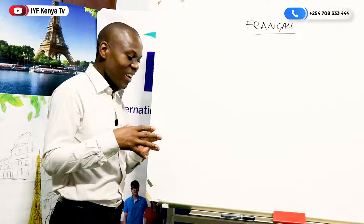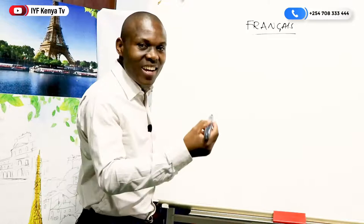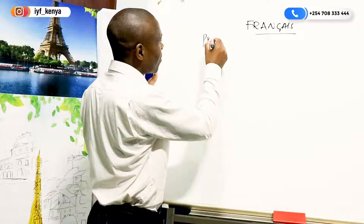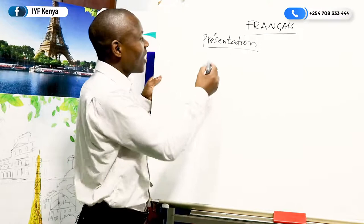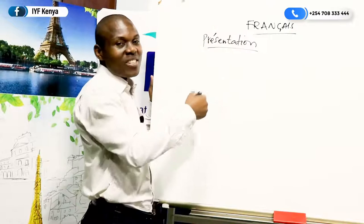In French we say it this way, so you can write today's lesson title as 'présentation' — like that. I'm very sure by now you know the reason why we put these things here. We call it accent and it has to be there. If it's not there it will become an English word, but because of this accent now it's a French word.